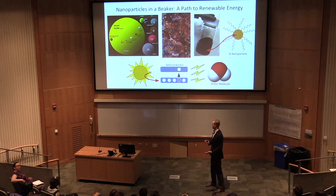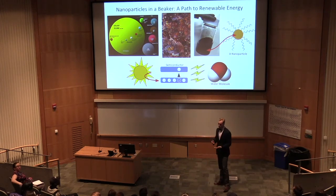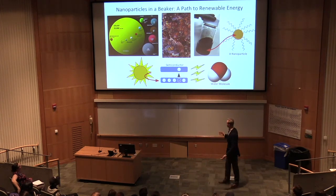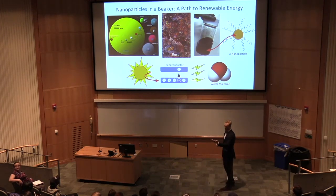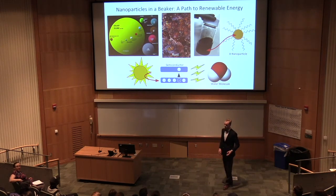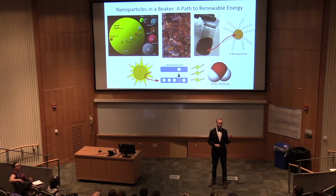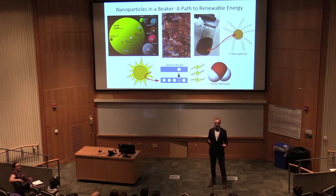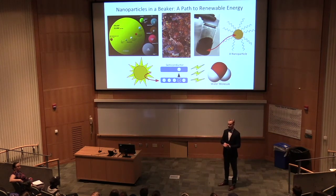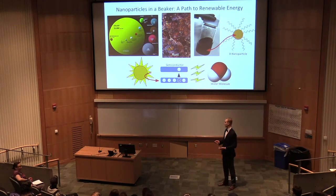To meet that goal, we have the water splitting process, which you see here at the bottom. Somehow we need to convert the sun's energy into splitting this water molecule into hydrogen gas and oxygen gas. We can use that hydrogen gas as a fuel, the way you would use gasoline in cars. And that really has a storage effect — you can keep the hydrogen gas in a tank overnight and use it at any time.